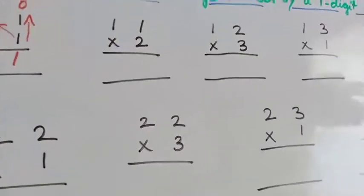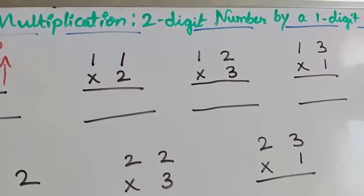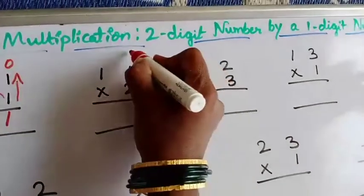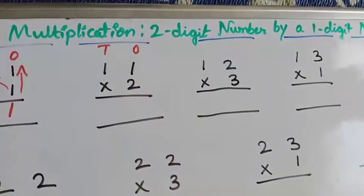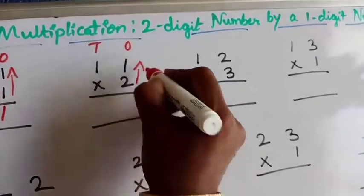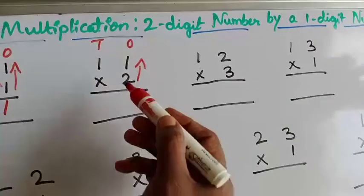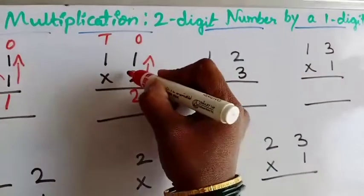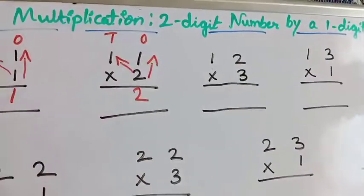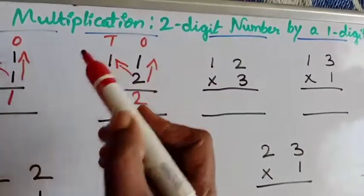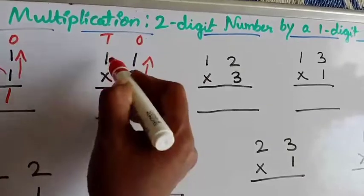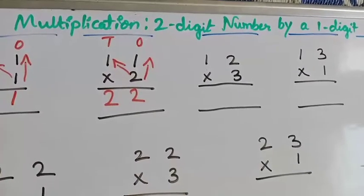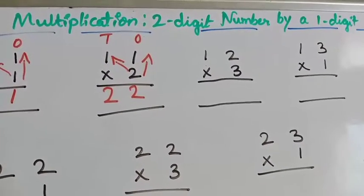Let's move to the second example: 11 into 2. The first step — write 1's place and 10's place. The second step — put the arrow mark. Then start finding the answer: 2 one's up is 2. Next, from down to up we go to the 10's place — 2 one's up is 2. Write it exactly below the 10's place. The answer should be written properly according to the place value.